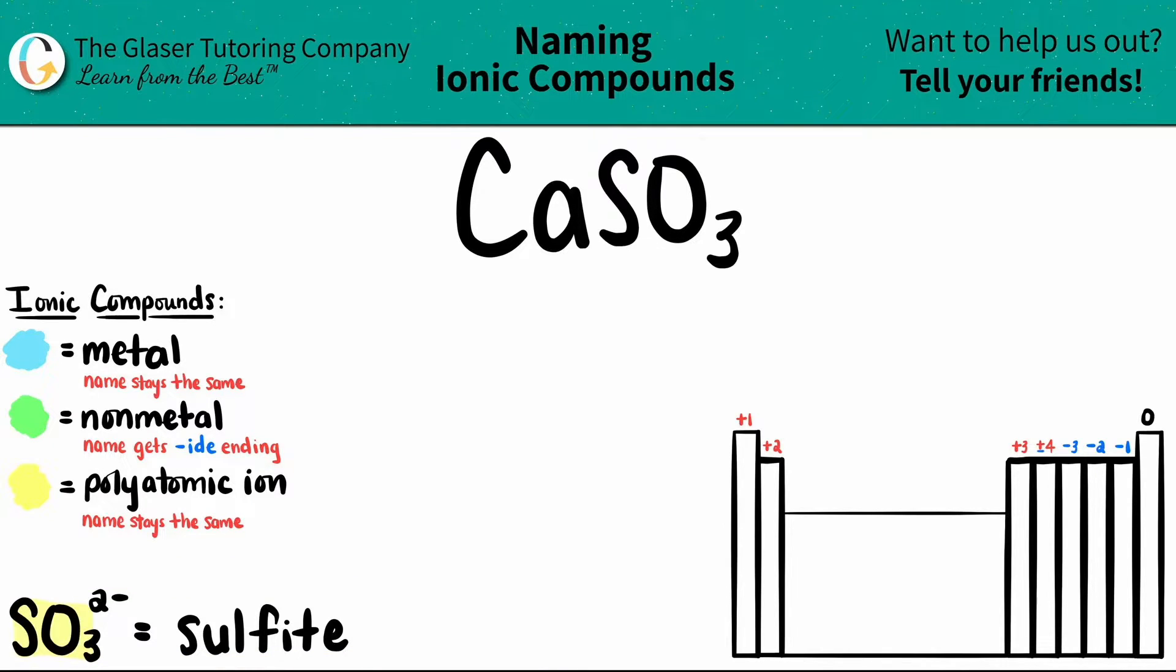SO3, and you should know the charge as well. Sulfite is always a negative two, but SO3 is sulfite. It's the sulfite ion.